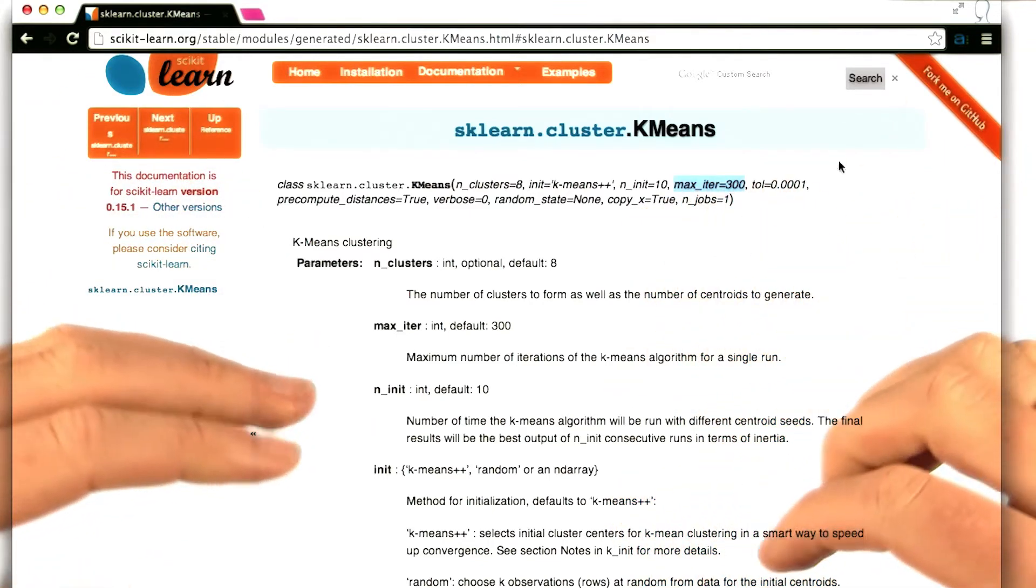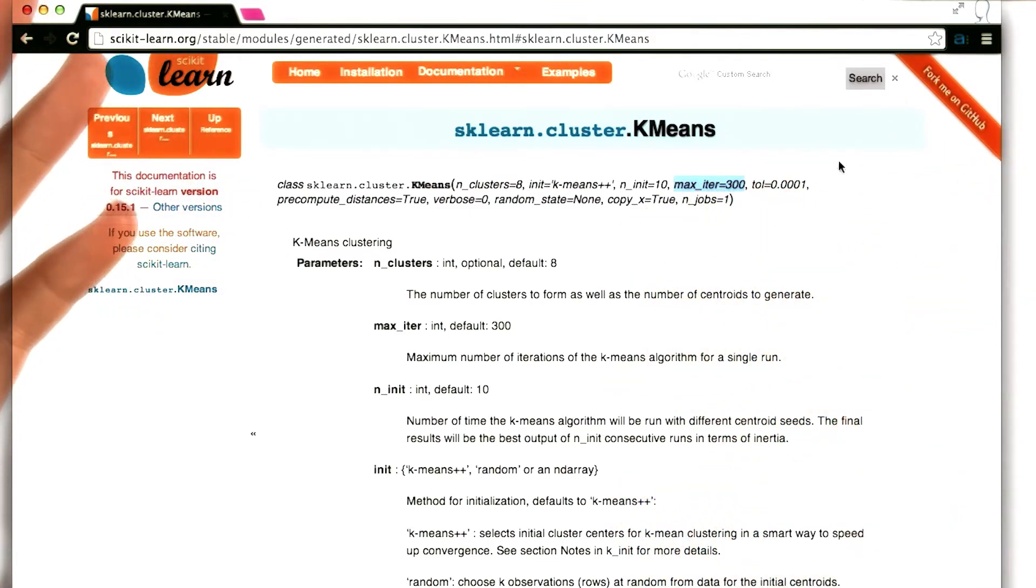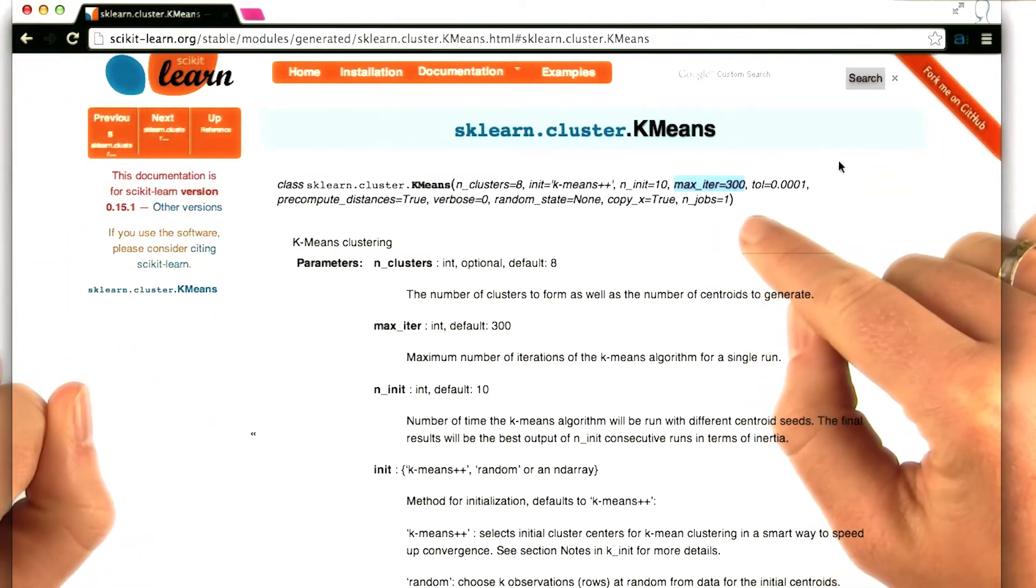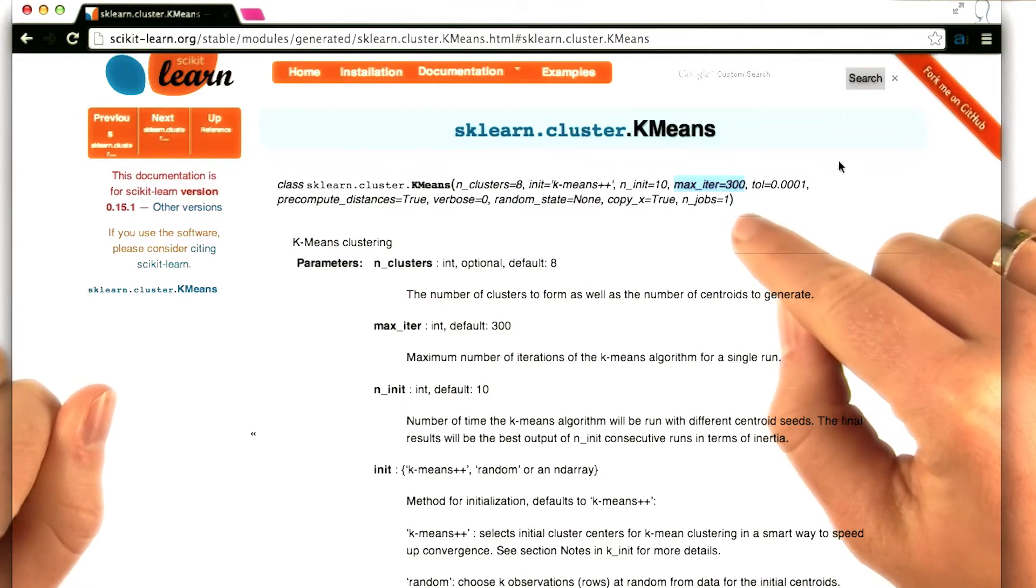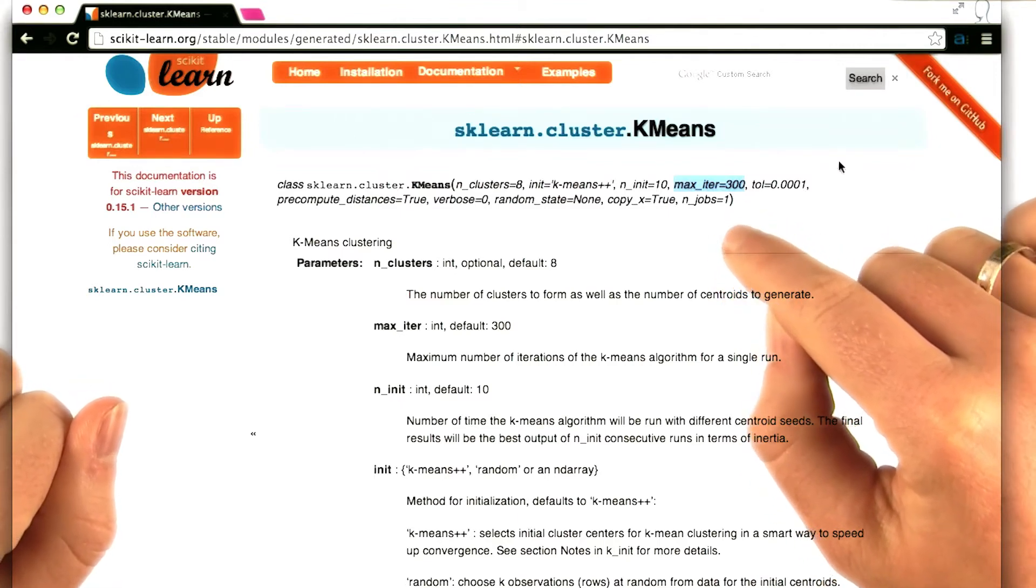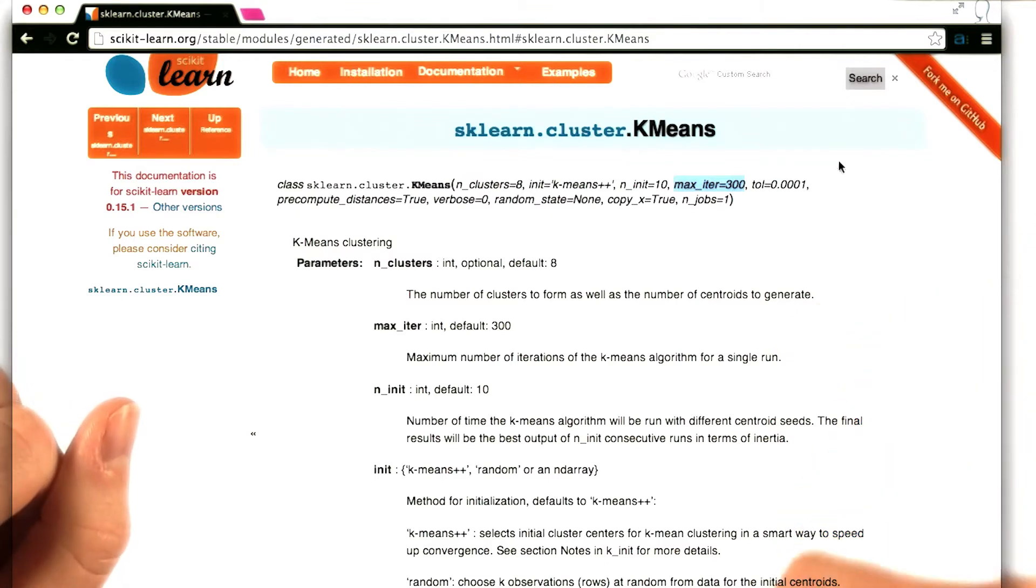And so max_iter actually says how many iterations of the algorithm do you want it to go through? 300 will usually be a very reasonable value for you. In fact, most of the time I would guess that it's going to terminate before it gets to this maximum number. But if you want to have a finer level of control over the algorithm and how many times it goes through that iteration process, this is the parameter that you want.